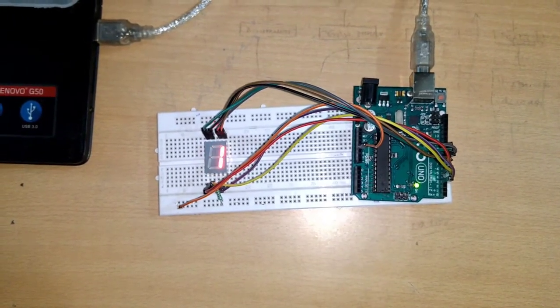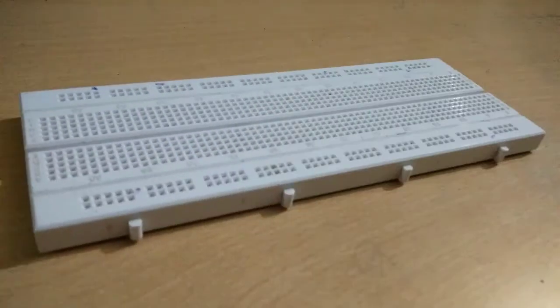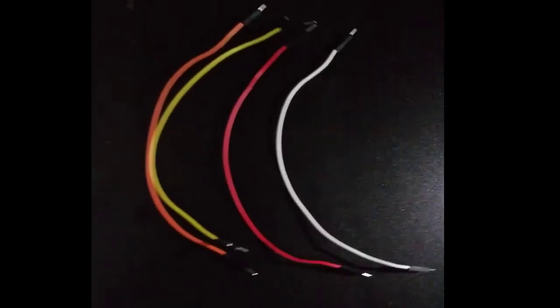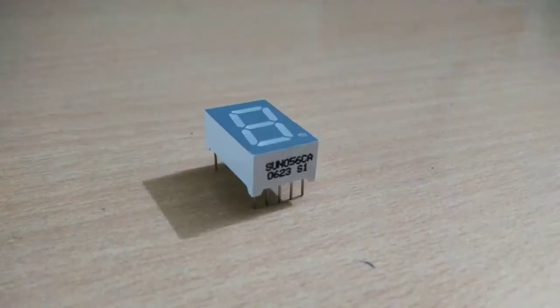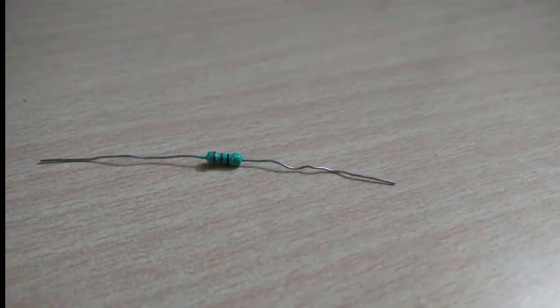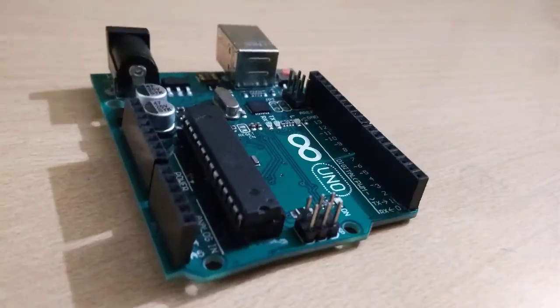Beginning with the components, the first thing you need is a breadboard, second connecting wires male to male, third 7-segment display, fourth 220 ohm resistance and Arduino Uno R3.